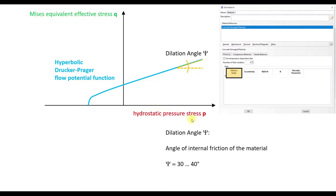And you can see it's a function in a diagram with the equivalent effective Mises stress and the hydrostatic pressure stress. And here in this function, we can here see the slope of the function and the angle here is the dilation angle. And it ranges from 30 to 40 degrees.